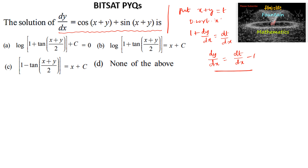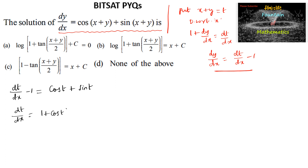Substituting into the equation, we get dt/dx minus 1 = cos t + sin t, which can also be written as dt/dx = 1 + cos t + sin t.